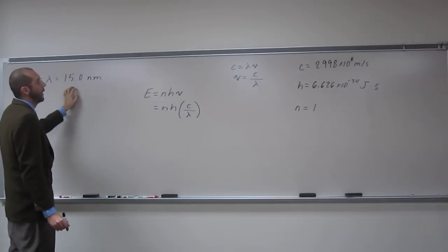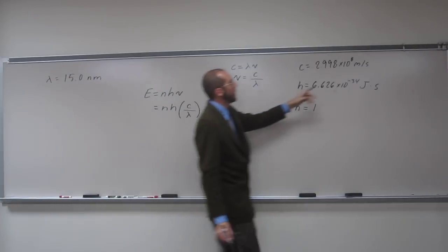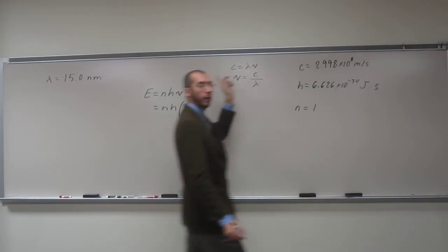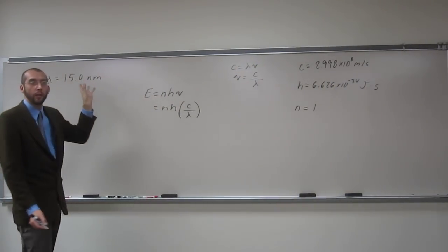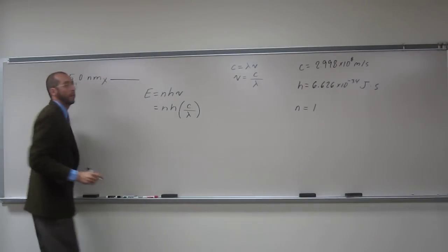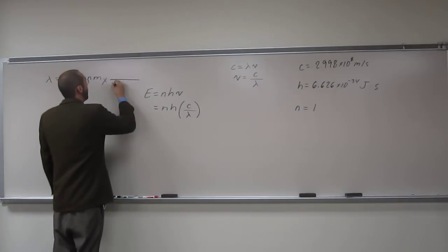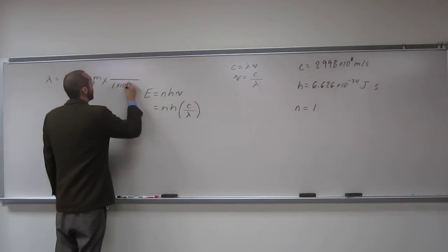Because we've got wavelength here, the only problem is that we've got c in meters and wavelength in nanometers, so we're going to have to convert nanometers to meters. If you don't remember, this is one that you want to remember: there's 1 times 10 to the 9th nanometers per 1 meter.